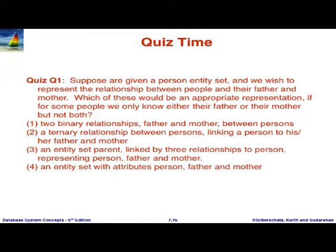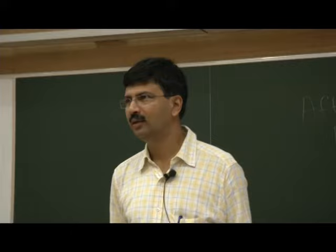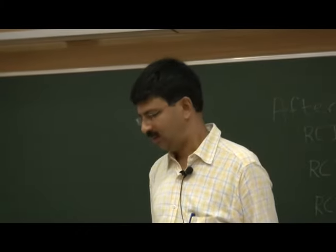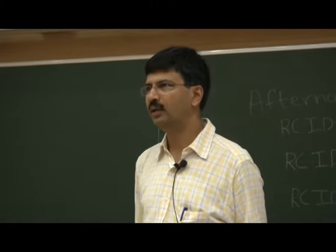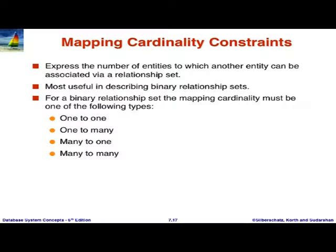One alternative — an entity set called parent linked by three relationships to person, father, and mother — is sometimes done as a way to avoid a ternary relationship. But in this case it is totally unnecessary. Binary is the better solution than ternary here.